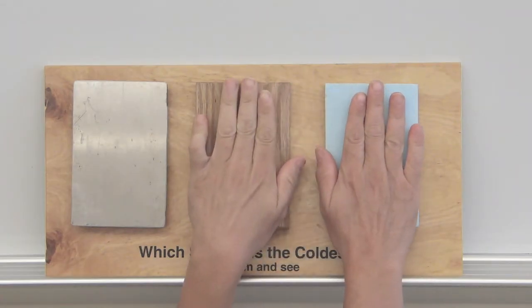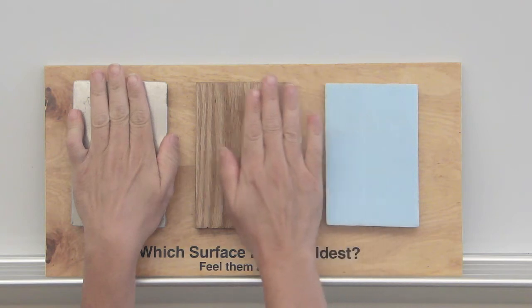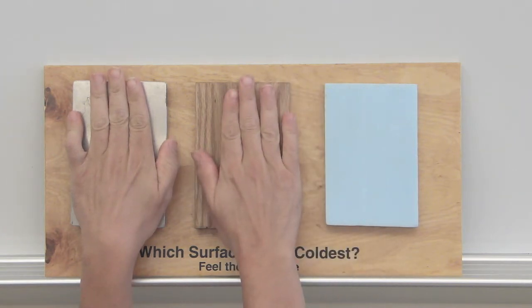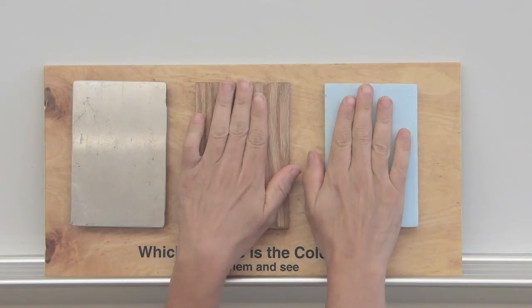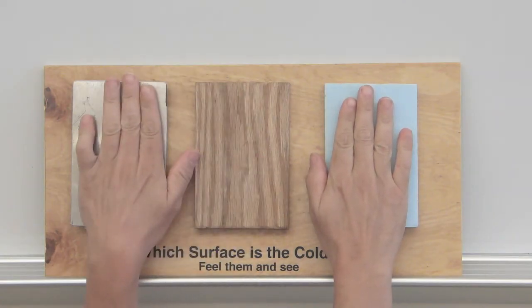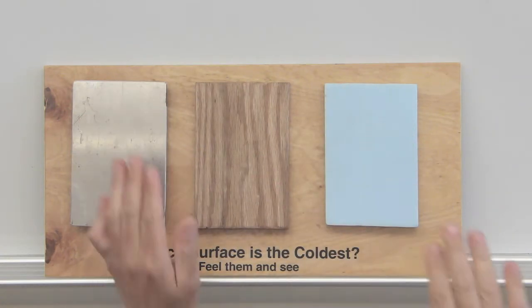When you put your hand on the wood or styrofoam, they are poor conductors, so very little energy is lost from the hand to the block, and especially the styrofoam, which will insulate the hand where the foam touches it, so it actually blocks the heat from leaving and makes the hand feel warmer.